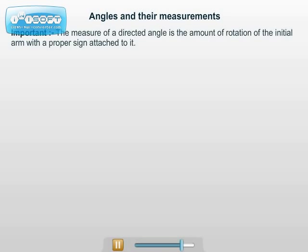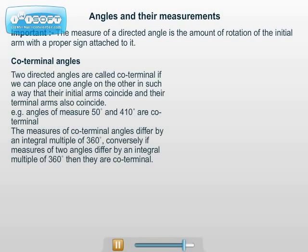Note that the measure of a directed angle is the amount of rotation of the initial arm with a proper sign attached to it. Coterminal angles: Two directed angles are called coterminal if we can place one angle on the other such that their initial arms coincide and their terminal arms also coincide. For example, angles of 50 degrees and 410 degrees are coterminal.